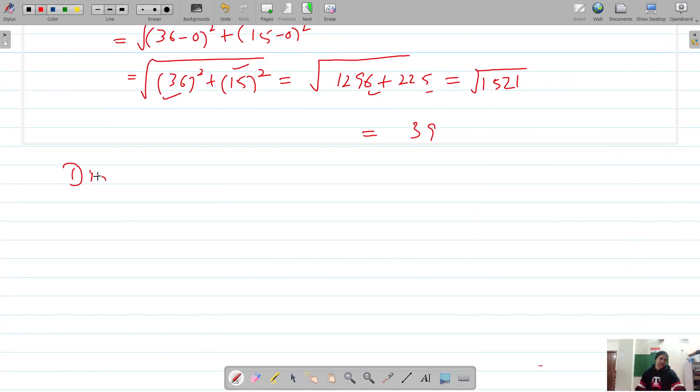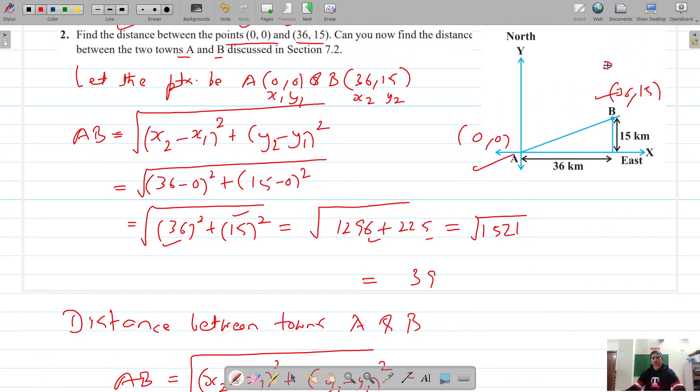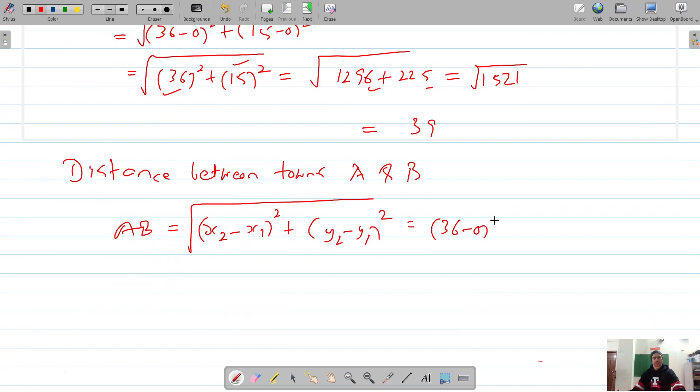Now the distance between towns A and B is AB, which should again be the distance formula: square root of (x₂ minus x₁)² plus (y₂ minus y₁)². So it's once again square root of (36 minus 0)² plus (15 minus 0)², which is square root of 36² plus 15² = square root of 1296 plus 225 = square root of 1521 = 39.